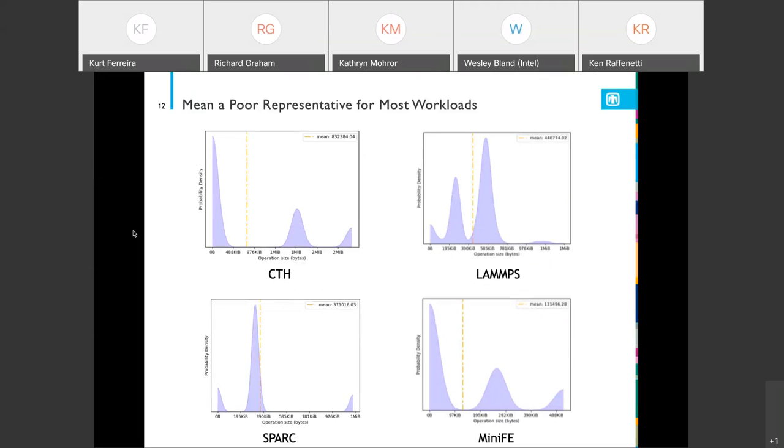Here I'm showing you the probability distribution function again, but I'm showing it for a number of applications: CTH, LAMPS, Sparc, and MiniFE. The mean is signified by that dotted yellow line. And what we can see from this is that the mean seems to be a poor representation for most of the workloads that we've looked at. It sits in this trough.